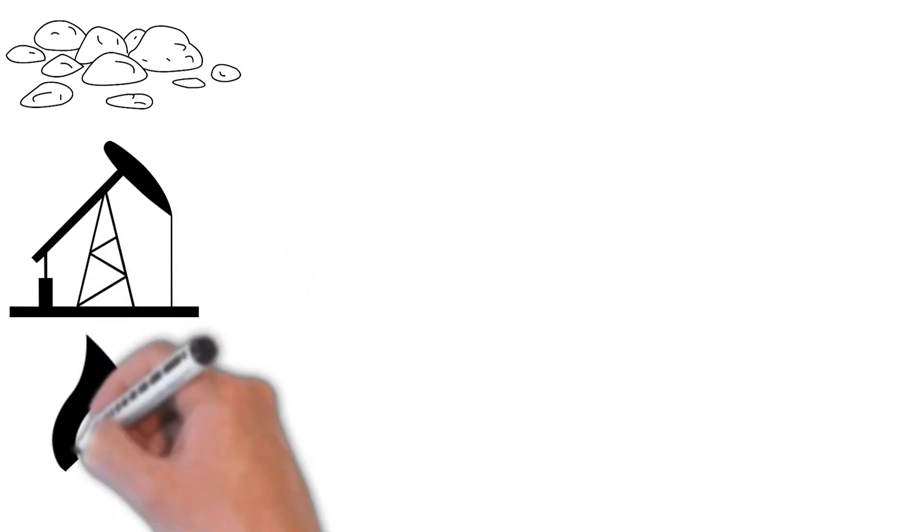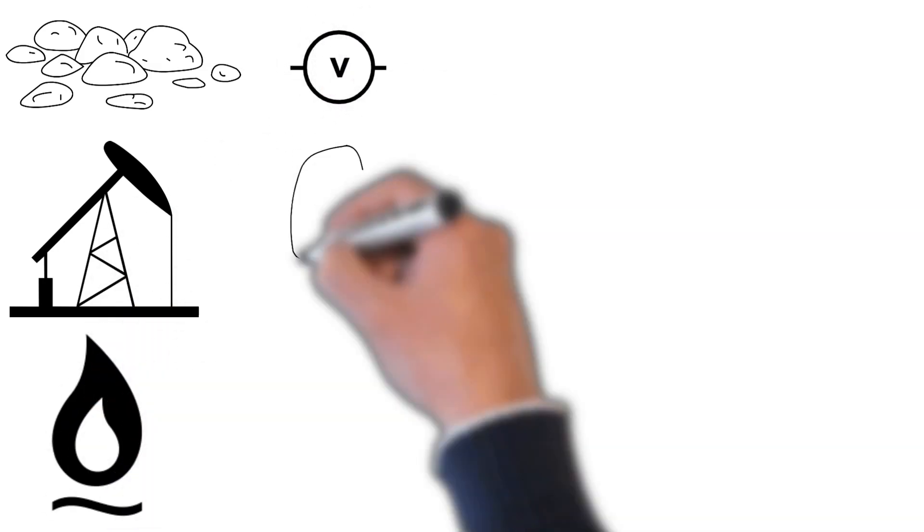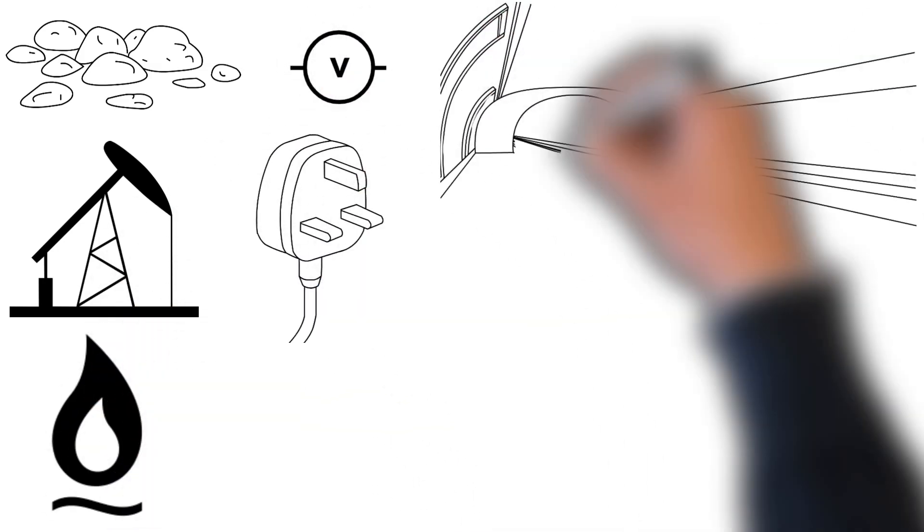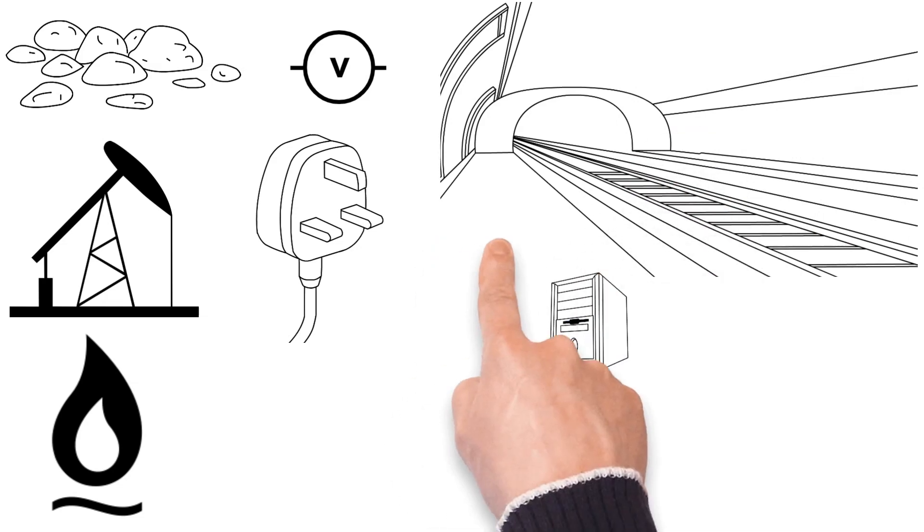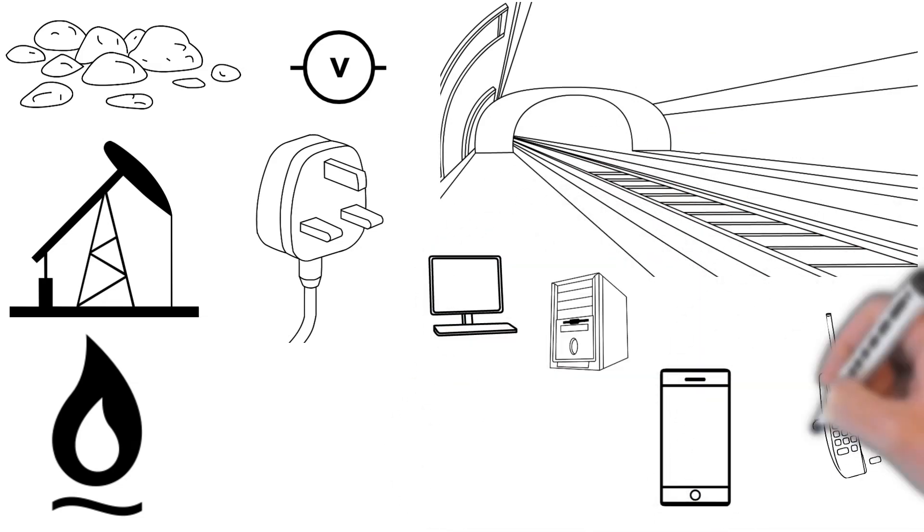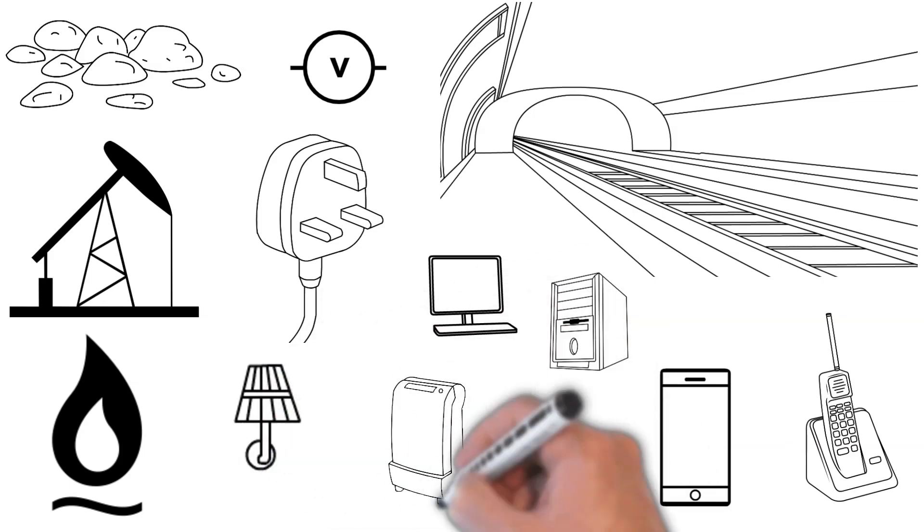All three types of fossil fuels—solids, liquids, and gases—have been used for the production of electricity, which provides power in a very controlled way to railways, computer networks, telecommunications, household lights, refrigerators, air conditioners, sensors, etc.